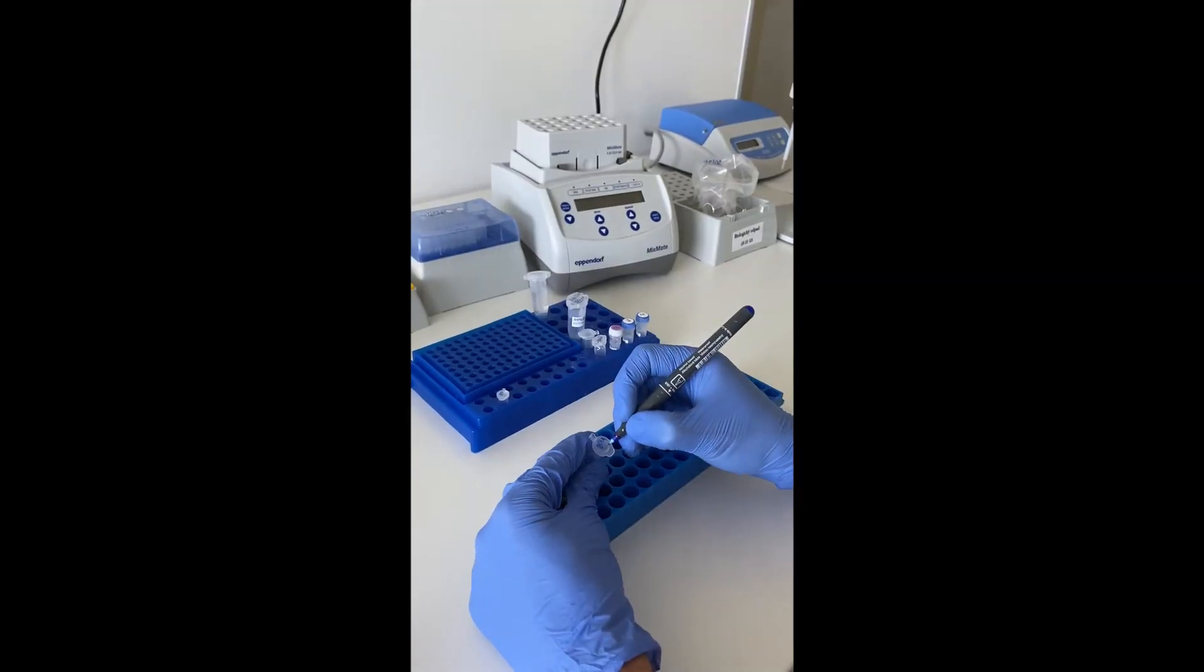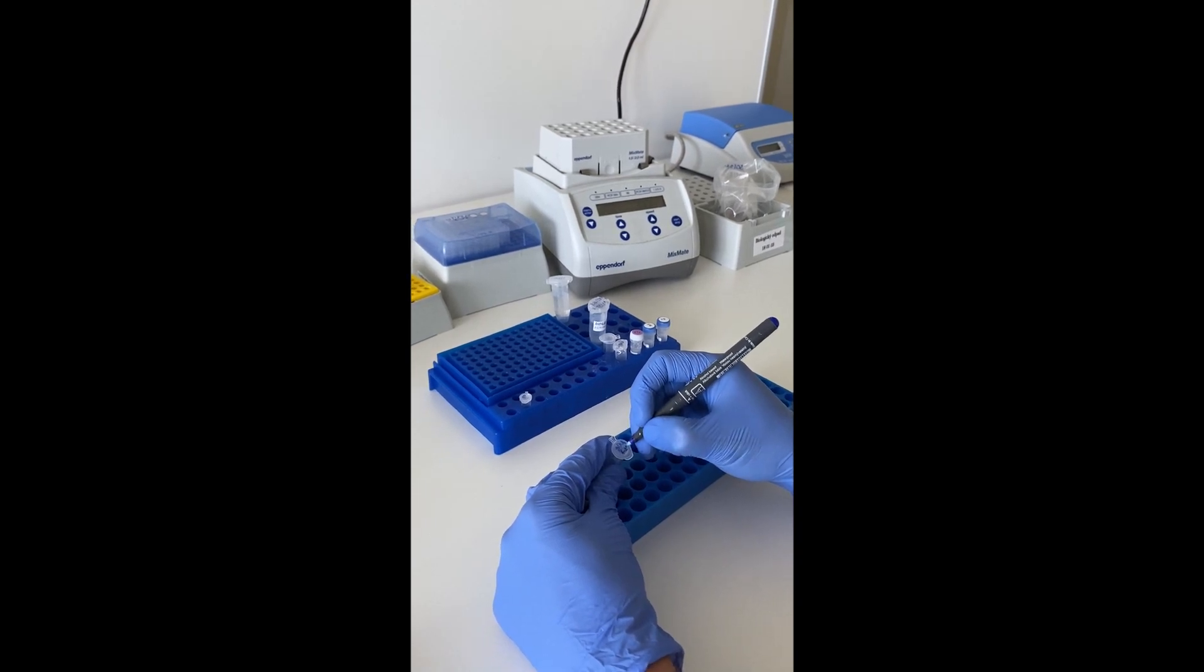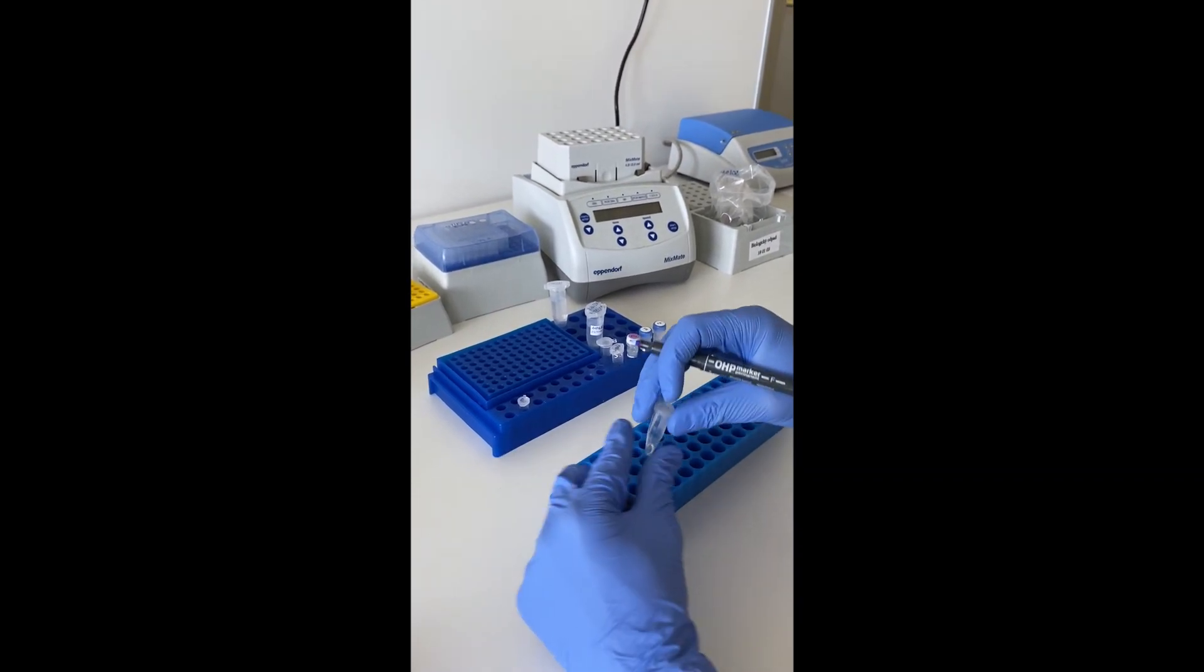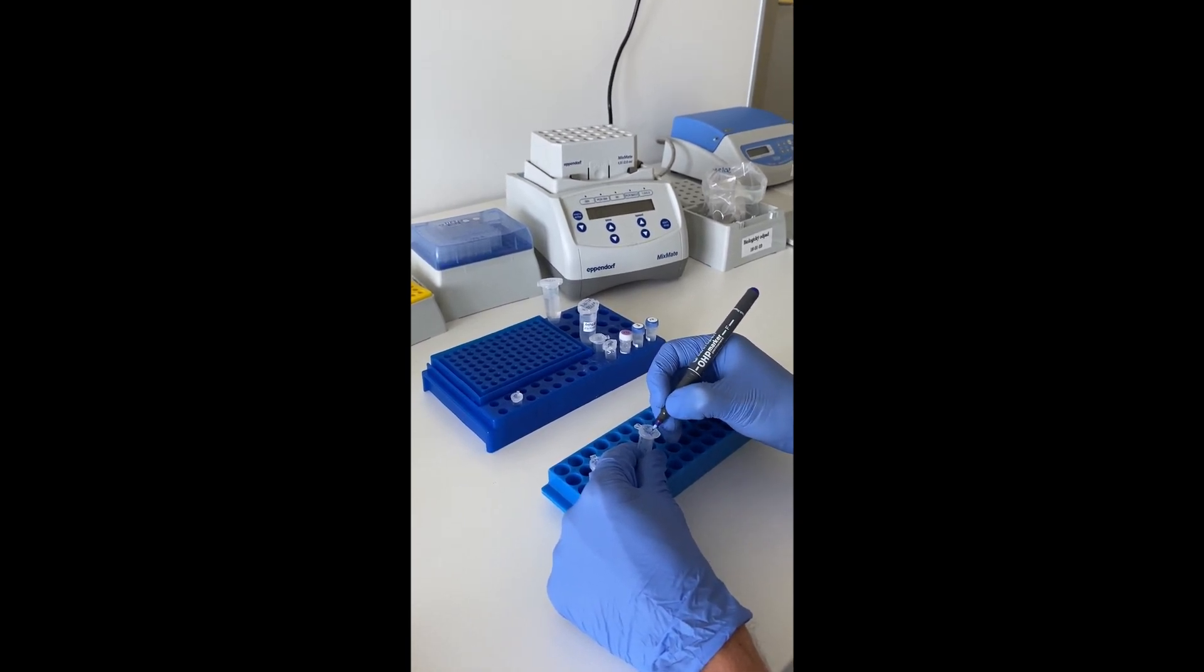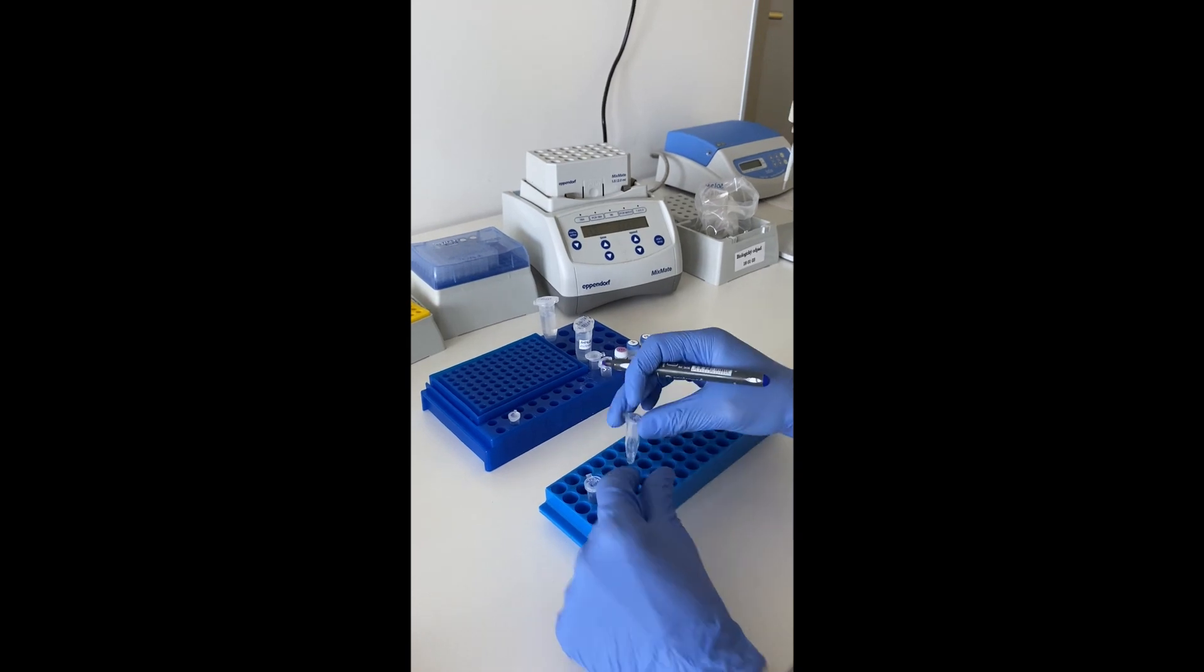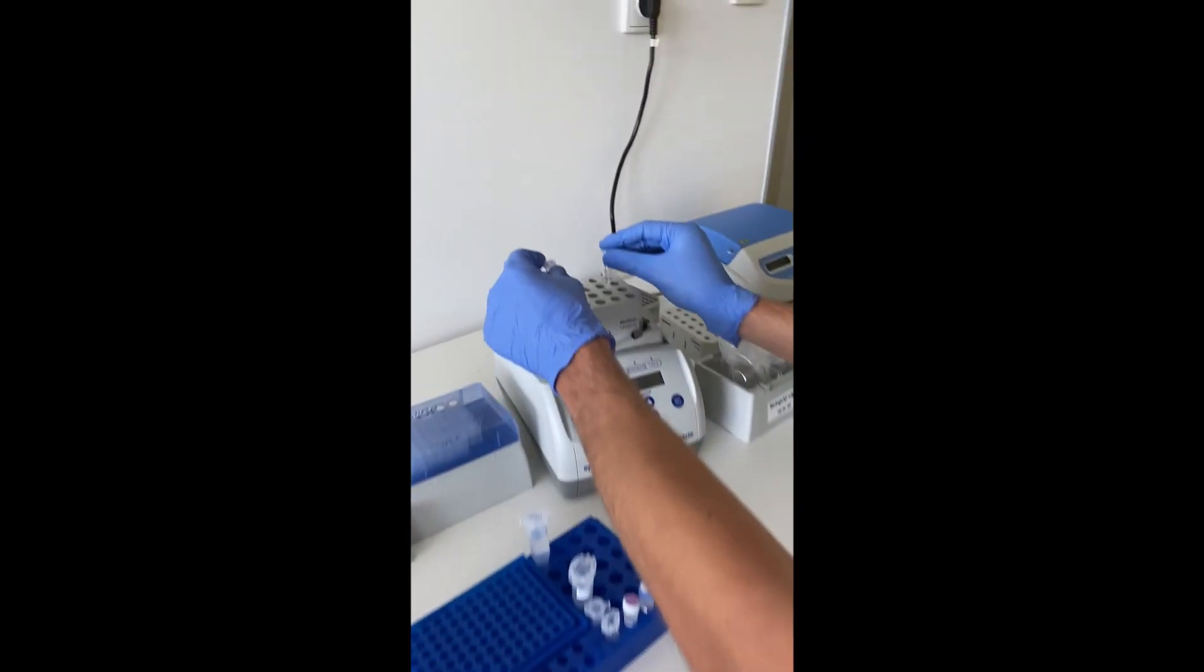For sample storage we use Eppendorf tubes. Their advantage is that they can be closed, thus protecting the sample from contamination, evaporation and also from spillage of the sample during its processing. Samples in Eppendorf tubes are always carefully labeled for clarity.